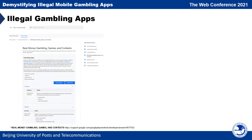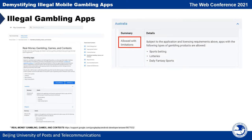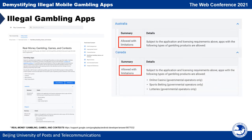This is the gambling policy page of Google Play. According to it, gambling apps are only permitted in several countries, and even in those countries, gambling apps are allowed only under strict conditions.